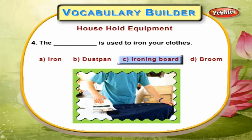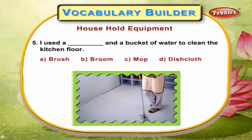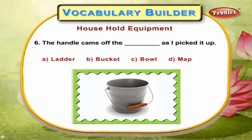The ironing board is used to iron your clothes. I used a mop and a bucket of water to clean the kitchen floor. The handle came off the bucket as I picked it up.